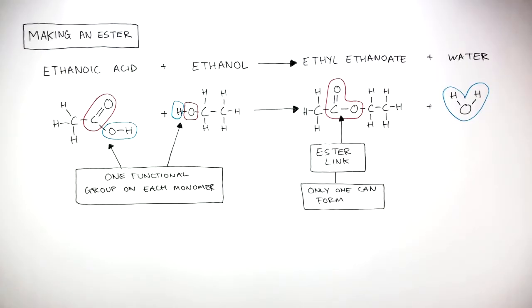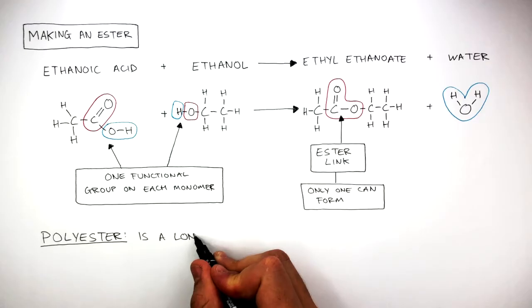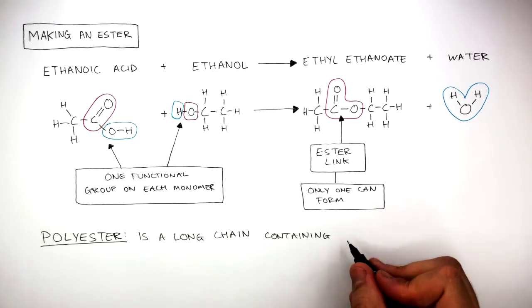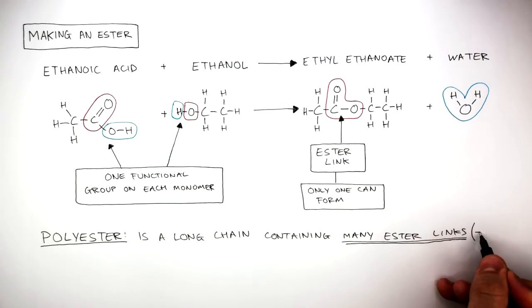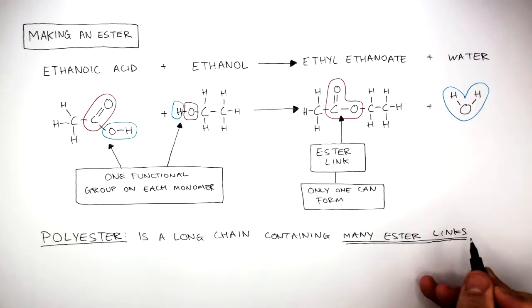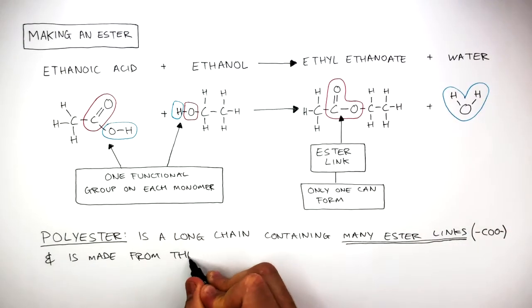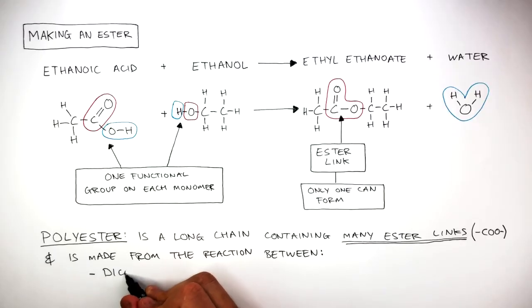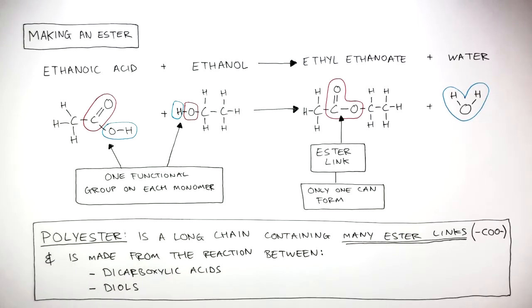Ethyl ethanoate is not a polyester as it is not a long chain. The definition of a polyester is a long chain containing many ester links (COO), and is made from the reaction between dicarboxylic acids and diols. These are monomers which have one functional group on each end of the monomer.